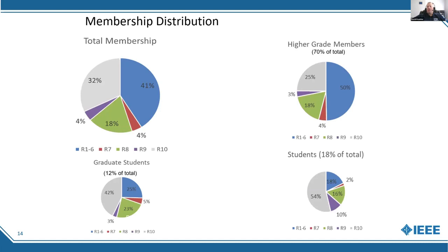For our higher grade members, roughly 50% are still within the United States. From a graduate student membership standpoint, it's about 25% in the United States, 42% in Asia Pacific, and about a quarter in Europe, Middle East, and Africa. From a student standpoint — roughly 18% of total membership — over half are in Europe, Middle East, and Africa, about 20% in the United States, and Region 10 represents about 16%. The largest regions in the world are number one Region 10, and number two Region 8.